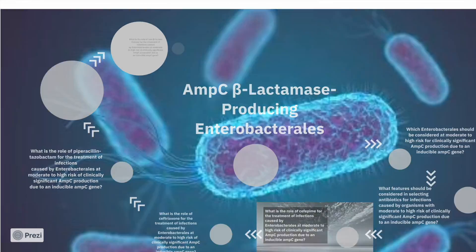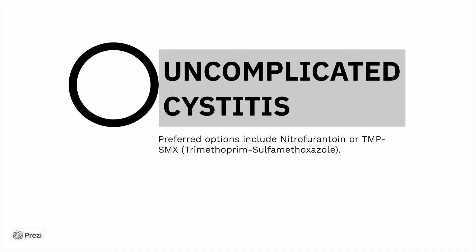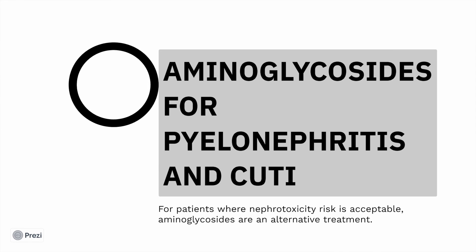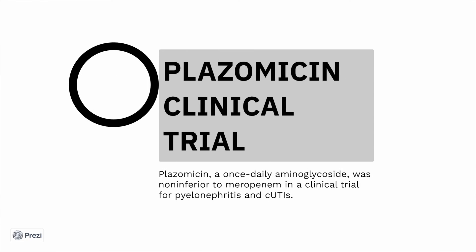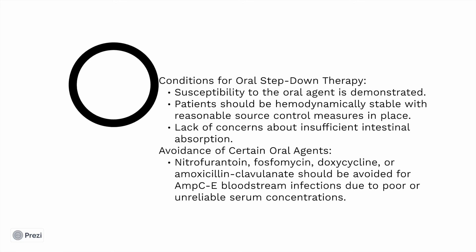Next is the role of non-beta-lactam therapy in these infections. For uncomplicated cystitis, nitrofurantoin and trimethoprim-sulfamethoxazole can be used. Aminoglycosides can be used for pyelonephritis and complicated UTI where nephrotoxicity risk is acceptable. Plazomicin clinical trials have shown it to be non-inferior to meropenem in these infections. For invasive infections, trimethoprim-sulfamethoxazole and fluoroquinolones can be used to treat, though these have not been evaluated in robust trials. Oral therapy should be started when the organism is susceptible, the patient is hemodynamically stable, and there are no concerns about insufficient intestinal absorption.